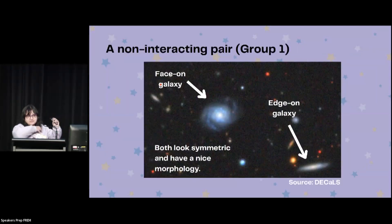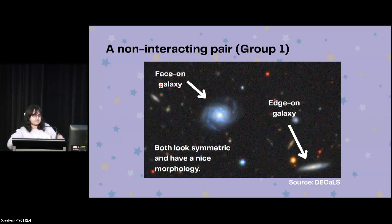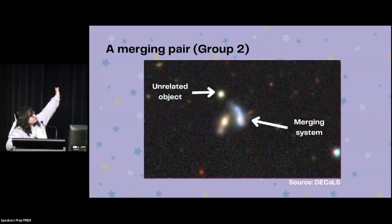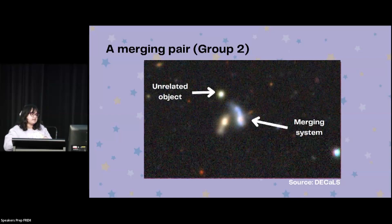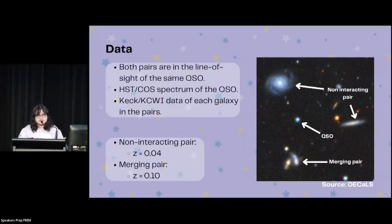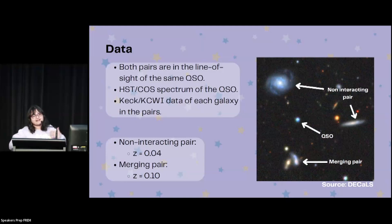That's where my research comes in. I have two pairs of galaxies that I've studied. First, a non-interacting pair that has two galaxies — one face-on galaxy and another edge-on galaxy. Both of them look symmetric and have a nice morphology, which is an indication that they are not merging. I also have a merging pair — there's an unrelated object that's a little annoying, but you can see the two galaxies here, and they are clearly merging. This system is very convenient to study because both of these pairs are in the line of sight of the same quasar that you can see there in the middle of the two pairs. I have COS spectra of this quasar.